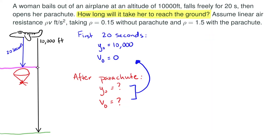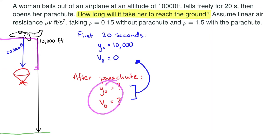So what's happening? What's the velocity at 20 seconds? What's the position at 20 seconds? If we can understand how this is working and then plug in 20 seconds, we'll get these two quantities. So let's focus on the first 20 seconds.